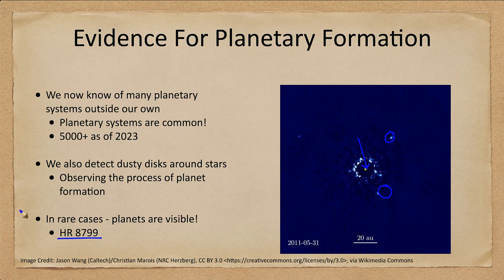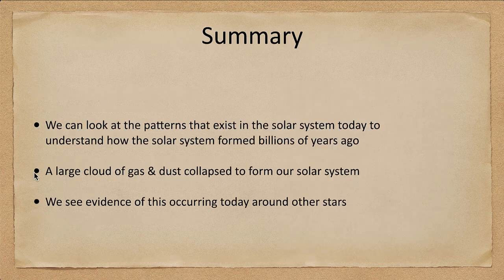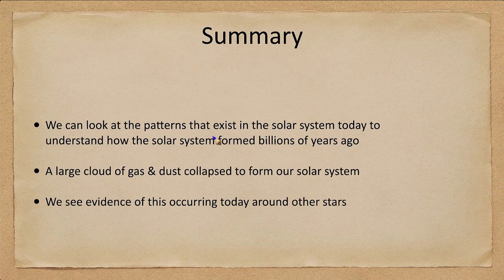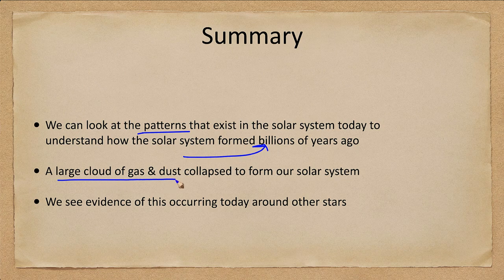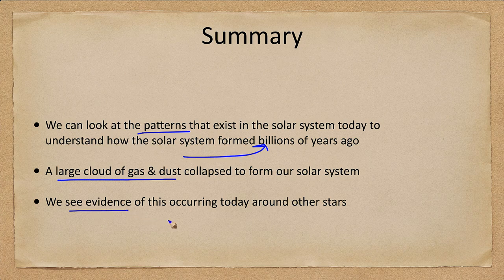Let's go ahead and finish up with our summary. What we've looked at is the way we can understand patterns that exist in the solar system. We look for those patterns today and they can help us understand how the solar system formed billions of years ago. We believe a large cloud of gas and dust collapsed that formed our solar system, and we can see evidence of similar things occurring today around other stars.